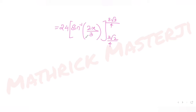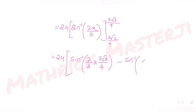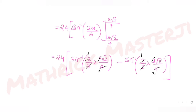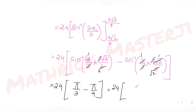Substituting the upper limit x = 3√3/4: the 2 and 4 partially cancel, and the 3s cancel, leaving √3/2. For the lower limit x = 3√2/4: similarly we get √2/2 = 1/√2. So the expression becomes 24·[sin⁻¹(√3/2) − sin⁻¹(1/√2)] = 24·[π/3 − π/4] = 24·π/12 = 2π.